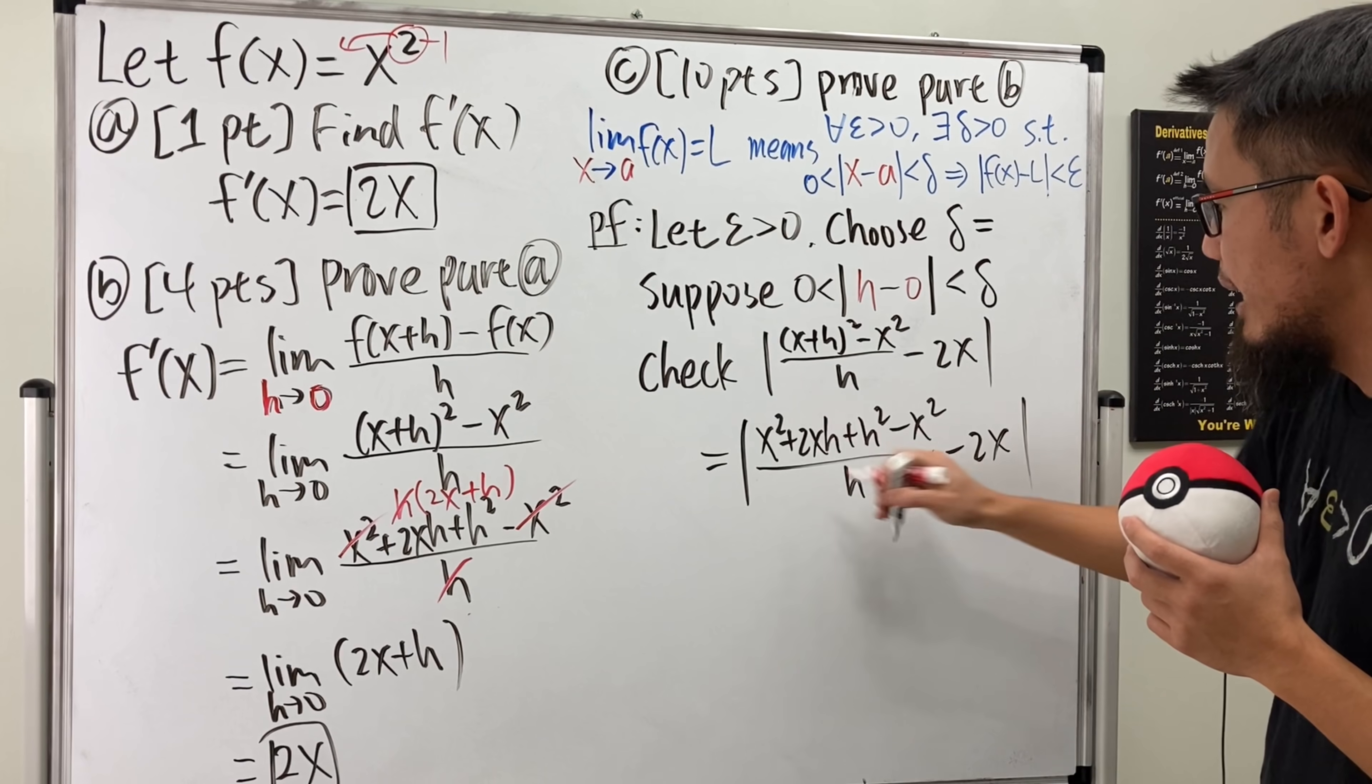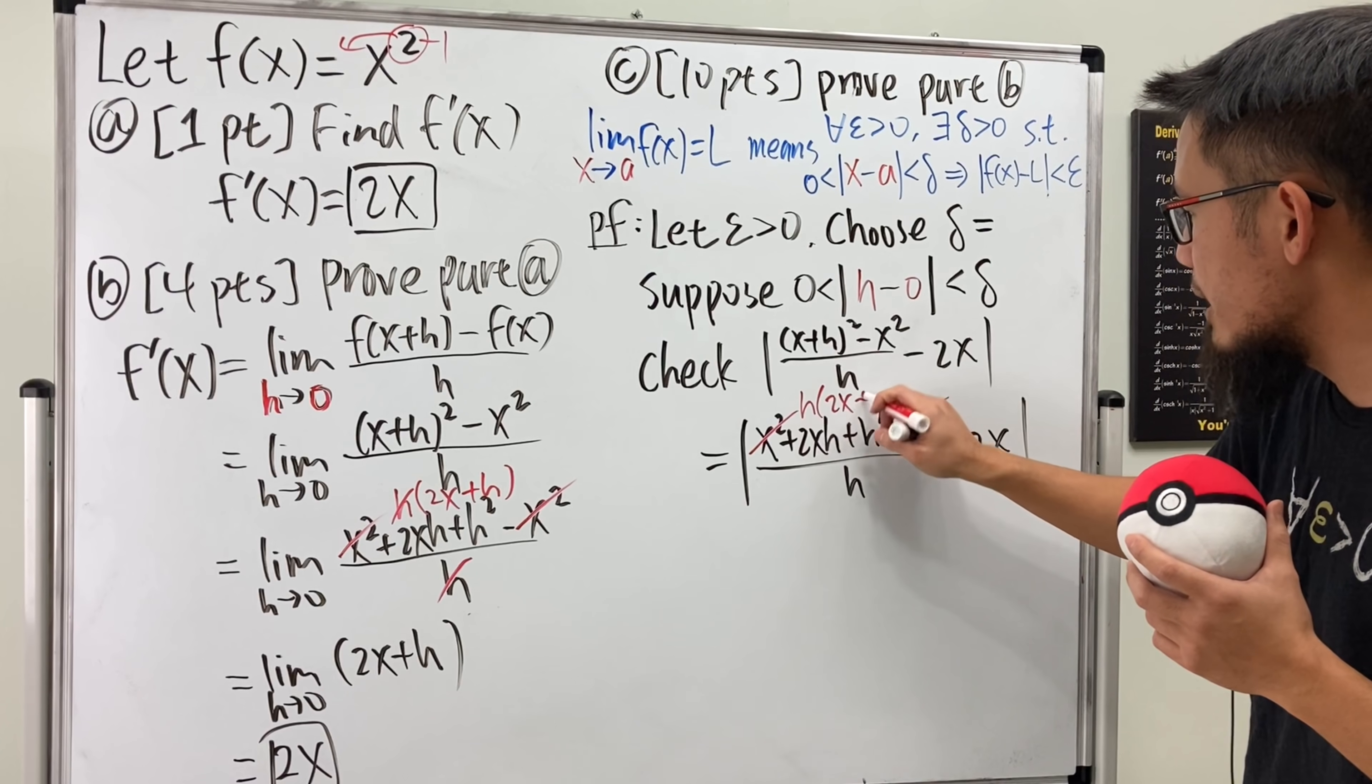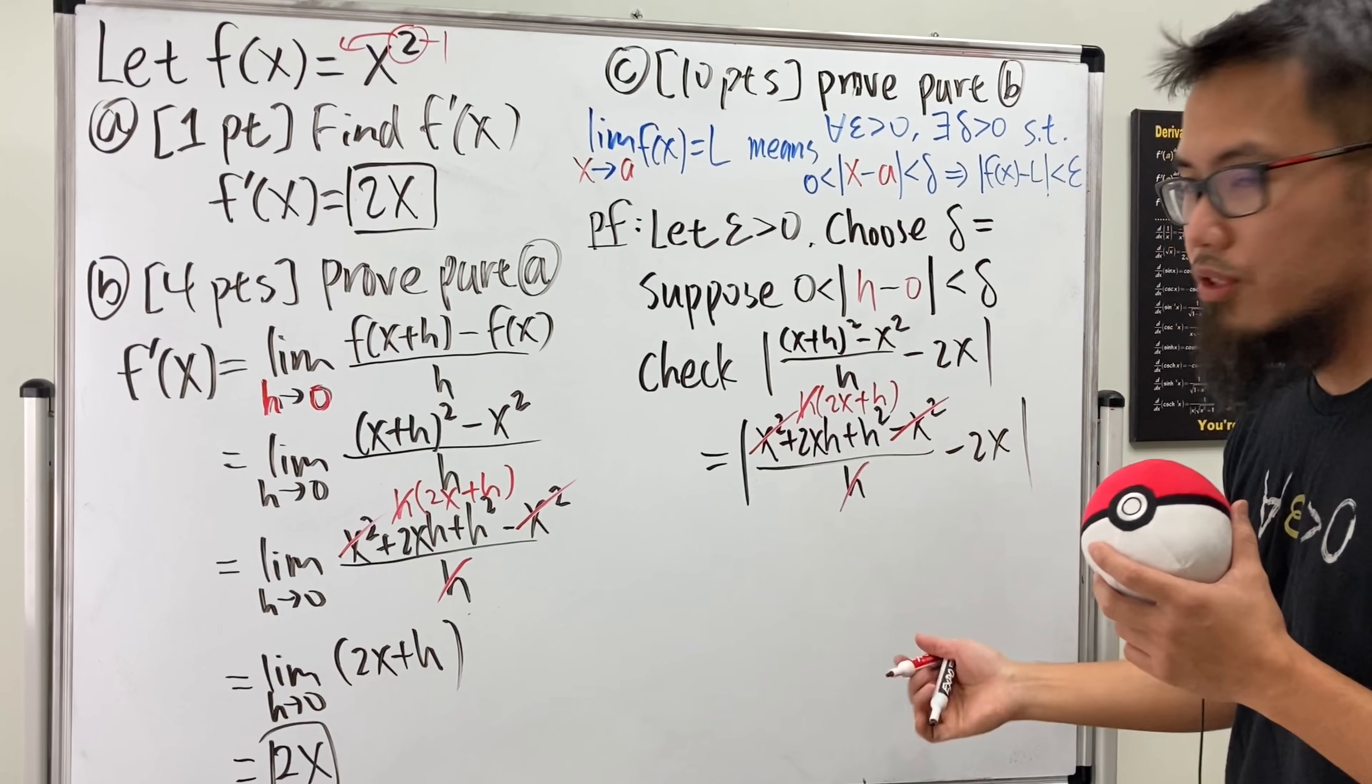Of course, we can do the algebra, so let's go ahead and do the algebra again. And you see, here, again, this and that cancel, we can factor out an h, and then we get 2x plus h, and this and that cancels out again.